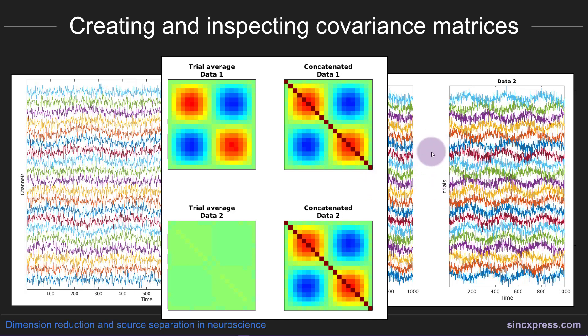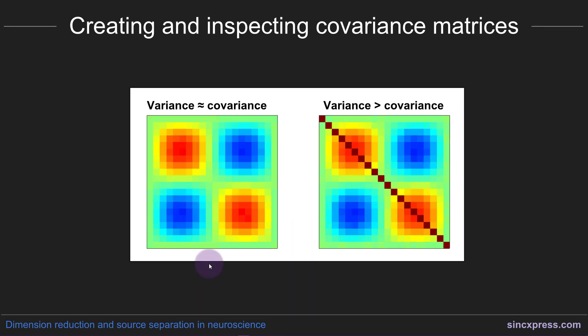These are simulated data, so this is a somewhat extreme case, but it is fairly realistic in the sense that brain data and many other biological signals have some phase-locked component and some non-phase-locked components. Covariance matrices are so important for multivariate data sets — you should always be inspecting them to look for patterns or suspicious behavior.